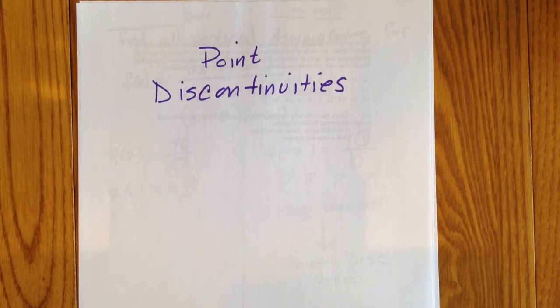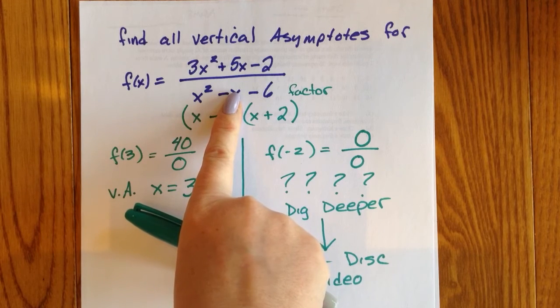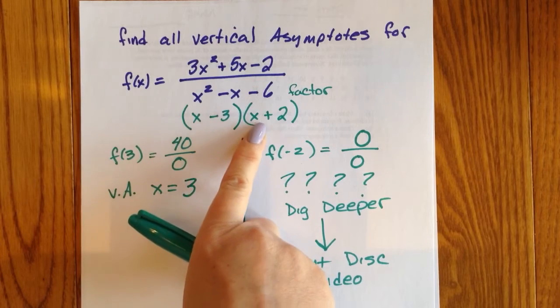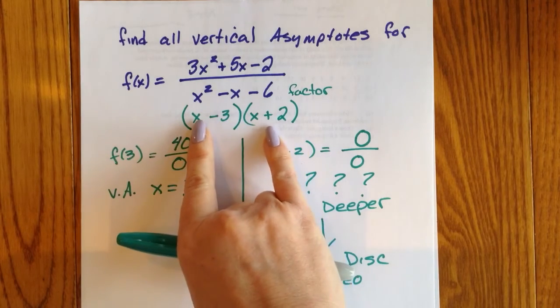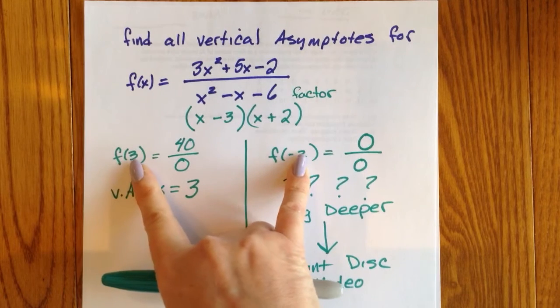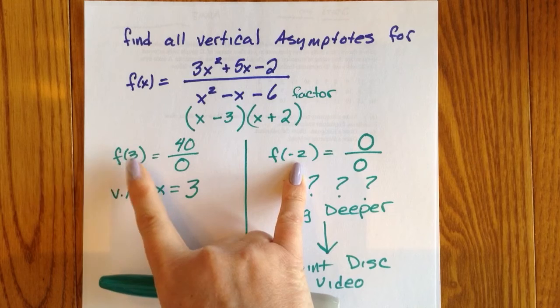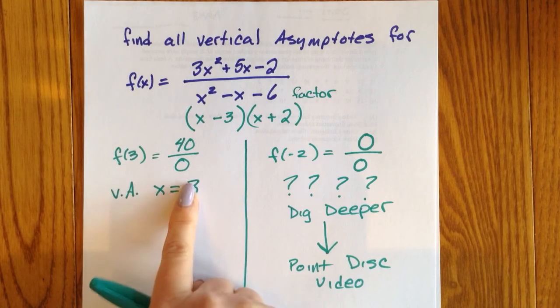When last we met, we were looking at vertical asymptotes. We looked at this example and factored the denominator and said there were two values that caused division by zero, both the value of three and negative two. When we filled in three, we got not zero over zero, vertical asymptote.